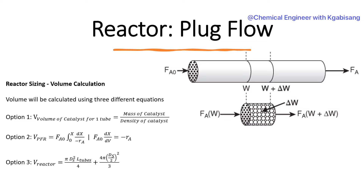Let's say we are dealing with a plug flow reactor, and our plug flow reactor happens to be adiabatic, meaning there are multiple tubes inside the reactor. If our heat exchanger were isothermal, there would be no need for multiple tubes. There are three equations I found: the first takes into account the volume of catalyst for one tube; multiplying by the number of tubes gives an estimate of the entire reactor volume. The second is the plug flow reactor design equation, and the third is another equation from literature to calculate the total reactor volume.